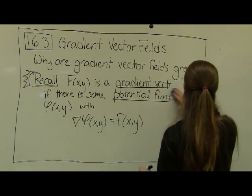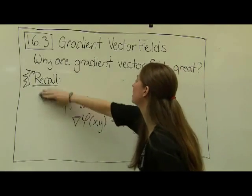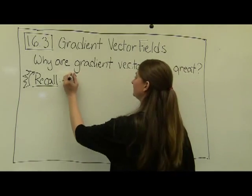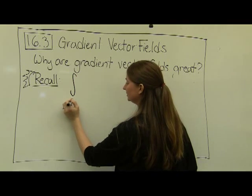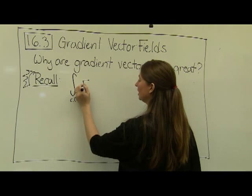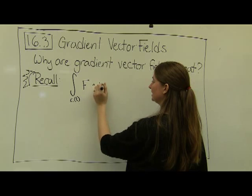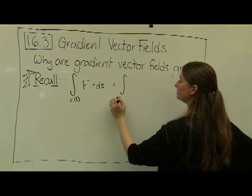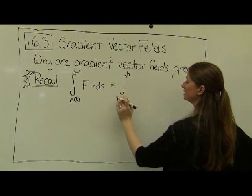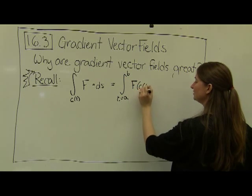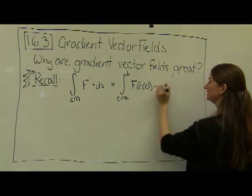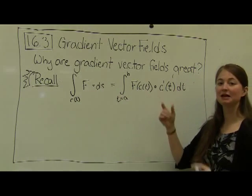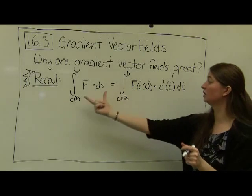Another fact I want to recall is line integrals. In the last video, we found that a vector line integral over some path c(t) of our vector field F dot ds can be computed as the integral from t equals a to b of F evaluated at c(t) dotted with c'(t) dt. This is summing up the amount of work done by the vector field along this path.